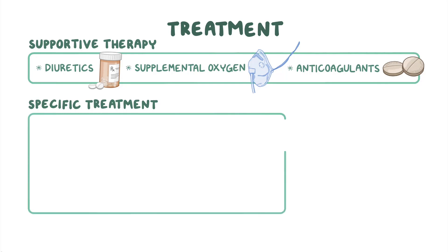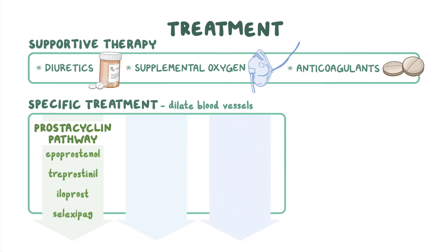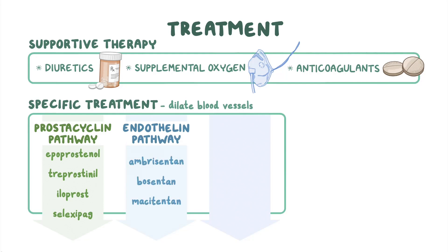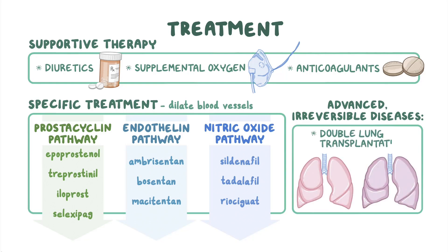Specific treatment of PAH is done with medications that dilate blood vessels by broadly targeting three pathways. The first is the prostacyclin pathway, and medications in this class are epoprostenol, treprostinil, iloprost, and selexipag. The second is the endothelin pathway, with drugs such as ambrisentan, bosentan, and macitentan. Lastly, there is the nitric oxide pathway, which includes sildenafil, tadalafil, and riociguat. Individuals with advanced, irreversible disease may require double lung transplantation.